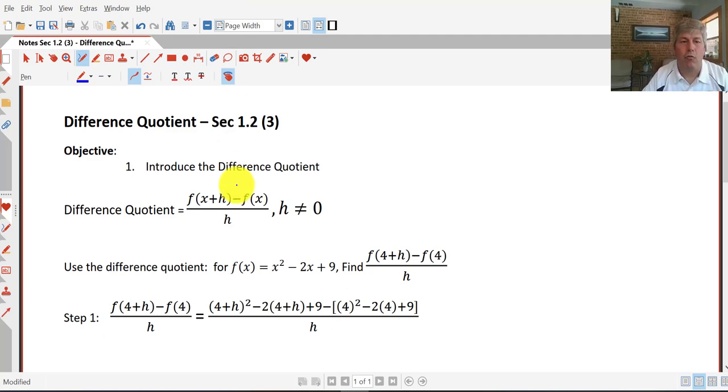The difference quotient is really a neat preview of some things that you'll be studying in calculus. So the difference quotient is displayed here: f of x plus h minus f of x all over h. And of course, h can't be zero because that would make our fraction undefined.